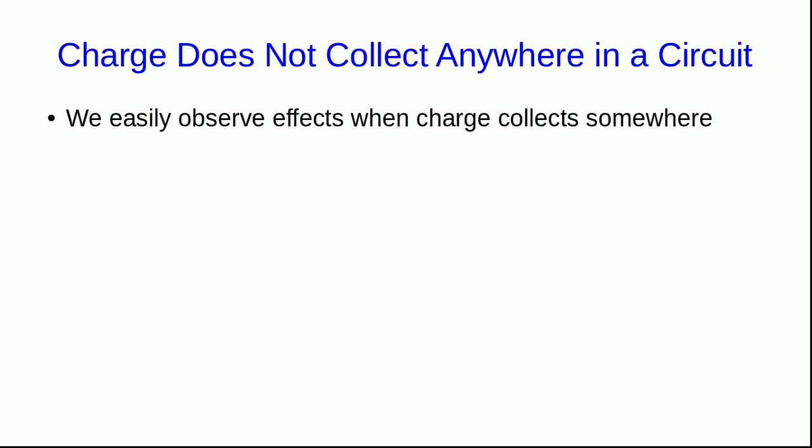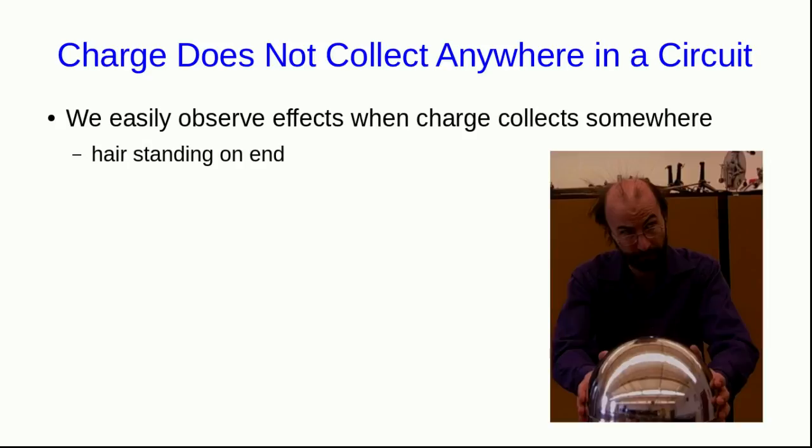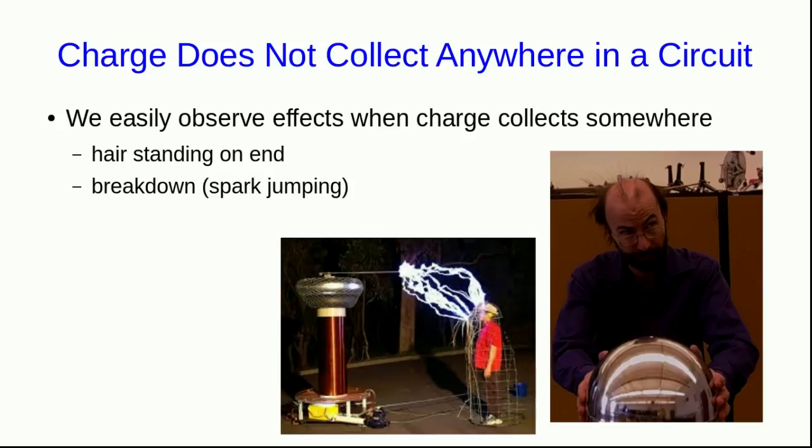One other thing to realize about circuits is that charge does not collect anywhere in a circuit other than on the plates of a capacitor. Remember that the charge on one plate of a capacitor is always the negative of the charge on the other plate and so the total charge on the capacitor is always zero. You can see this experimentally very easily because we easily observe effects when charge collects anywhere. If you're near it or particularly touching where the charge is collecting, your hair tends to stand on end and you usually notice that. And if a lot of charge collects somewhere then breakdown will occur and sparks will jump. Normally you don't have either of those happening in a typical circuit and that tells you that no charge collects anywhere in a typical circuit.